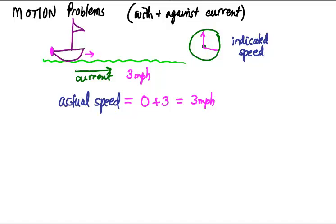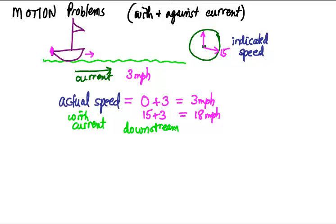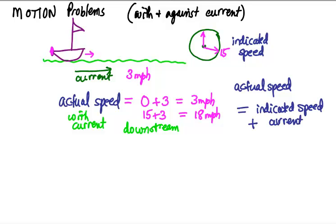Now suppose the gauge shows the boat is moving fifteen miles per hour. A person on the shore would see the actual speed as fifteen plus three for the current, so the actual speed is eighteen miles per hour. This is because we're going with the current — we're going downstream. So the actual speed downstream equals the indicated speed plus the current.